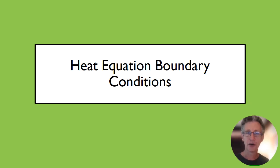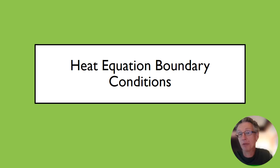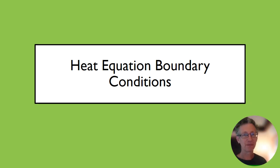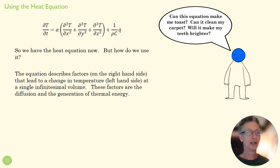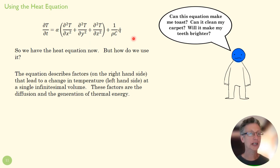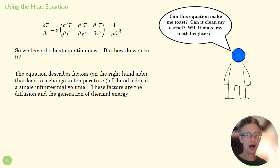So now we've got the heat equation, and we want to be able to solve a problem with it. We want to be able to figure out what's going to happen to a temperature field — we're going to do that analytically, that is, with math. The equation describes for us the factors that lead to a temperature change at a single point.